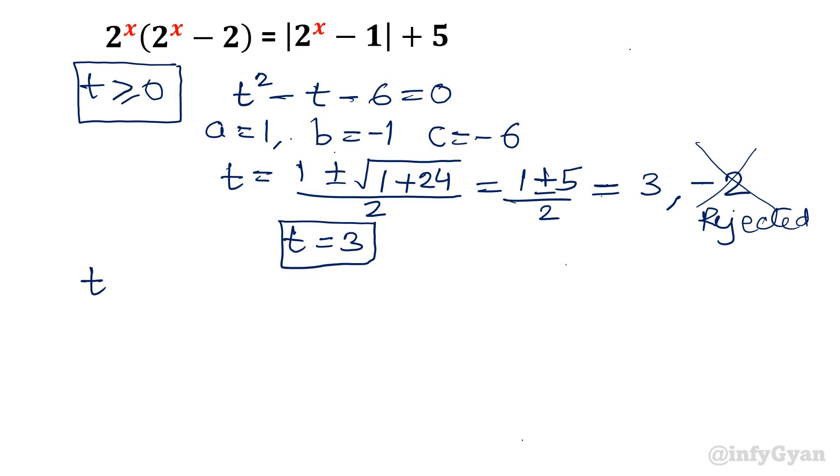Now let us consider the second solution, t negative. Equation was t square plus t minus 6 is equal to 0. A is 1, b is 1, c is negative 6.